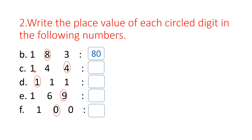Next: 144. The circled digit 4 is in the 1's place, so its place value is 4 ones, that is 4. Next, the circled 1 is in the 100's place, so the place value is 100.